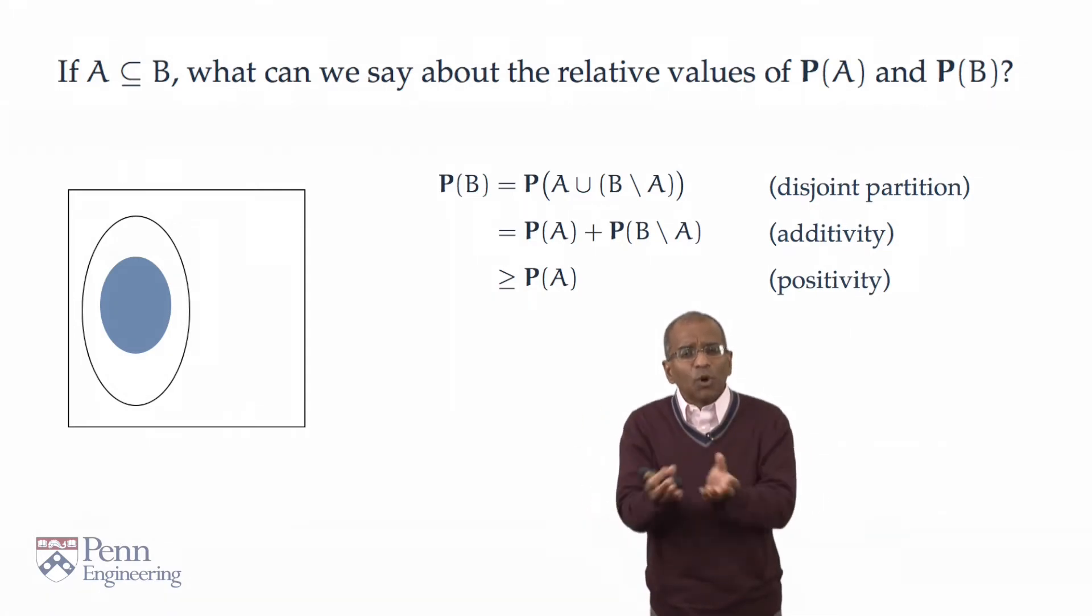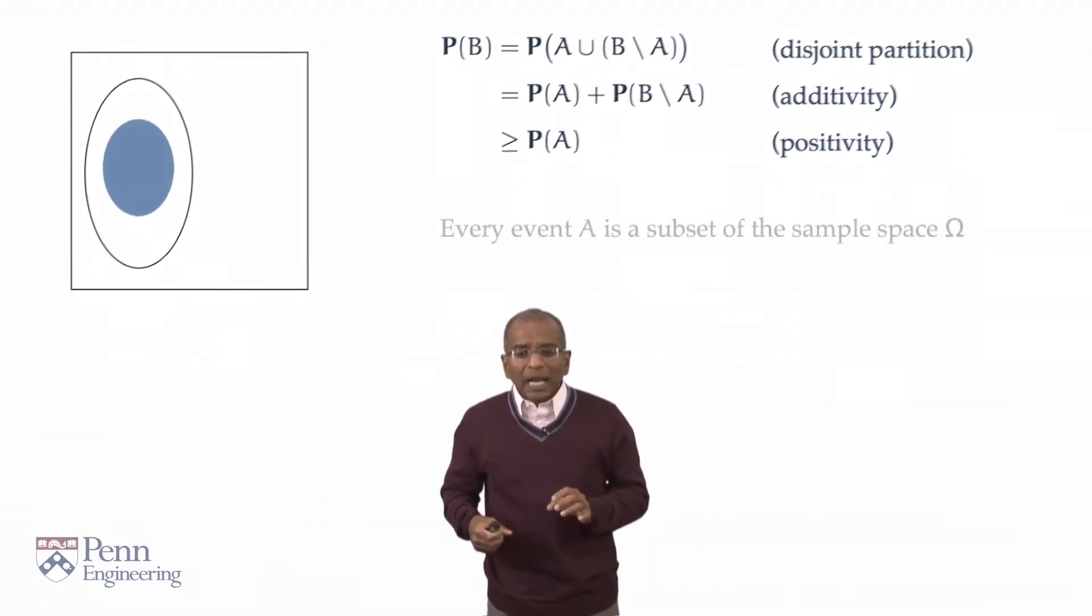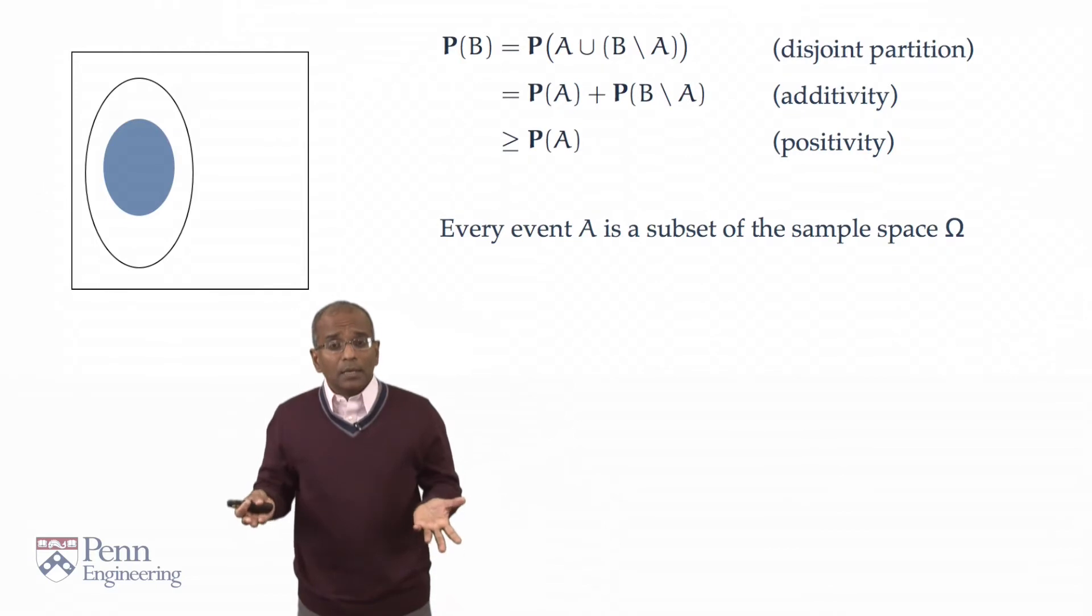All of this really was a codification of the basic idea that the whole is equal to the sum of its parts. An immediate consequence of this is the following observation. Any event A is a subset of omega. By definition, any event has to be a subset.